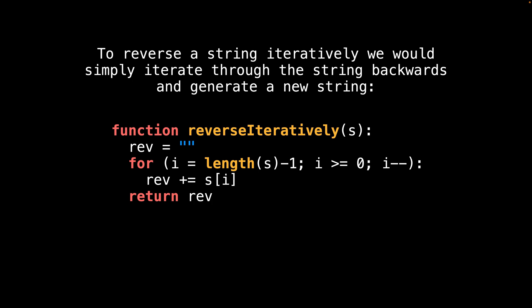If you were to implement this problem iteratively, the code would probably look something like this. You would start by initializing an empty string and then iterate through the characters of the original string backwards, adding each character to the new string as you go along and return the result.